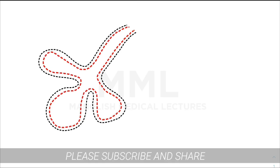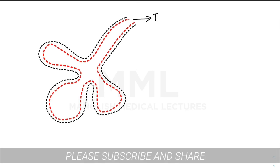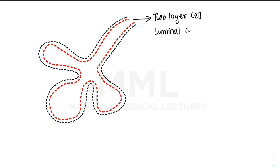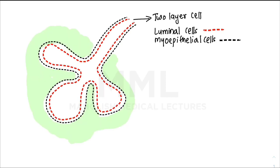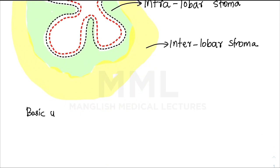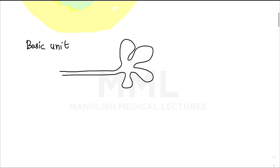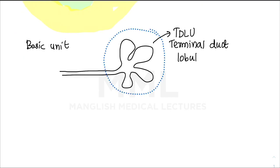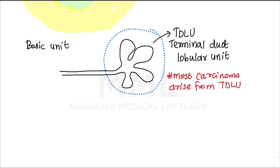We begin with the normal anatomy of the breast. The breast consists of ducts and lobules with a bilayered epithelium — two layers of cells: luminal cells and myoepithelial cells. The breast also consists of two stroma types: intralobar stroma and interlobar stroma. The basic unit of the breast is the TDLU — Terminal Duct Lobular Unit — and most carcinomas arise from the TDLU.